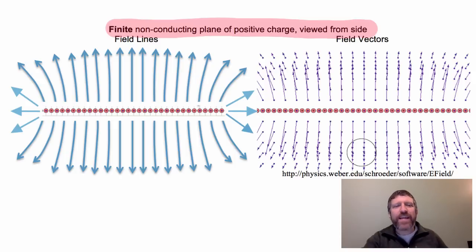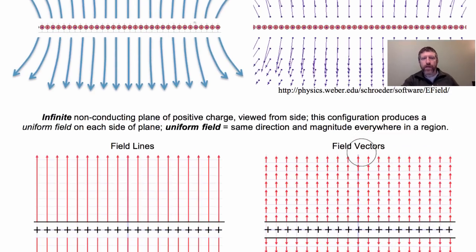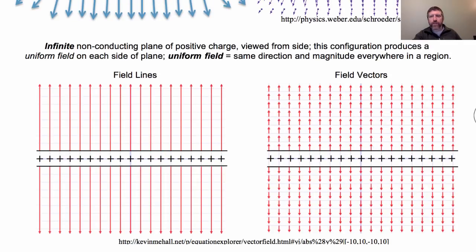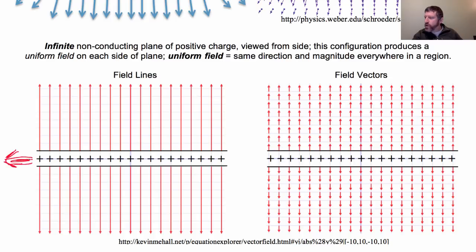Now an interesting thing happens if we have an infinite non-conducting plane. This plane goes on forever in both directions — this is not a field line, just showing the plate extends forever. In this situation, the lines never get any farther away from each other. Because of the infinite nature of this, the lines are always parallel, so this creates what we call a uniform field.